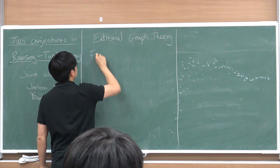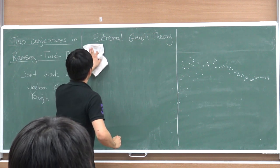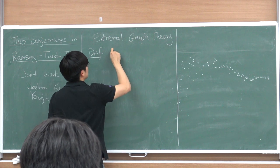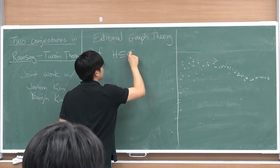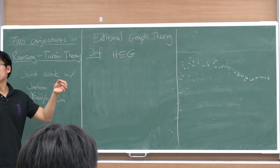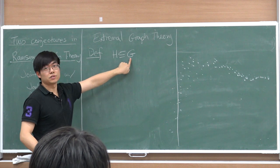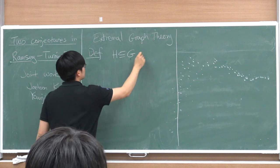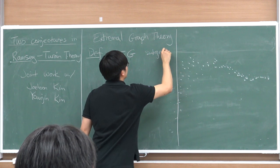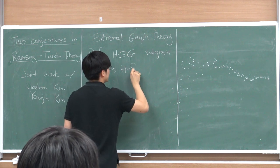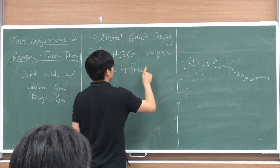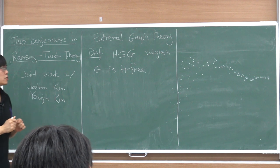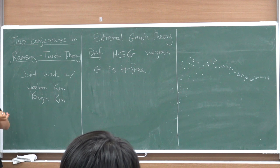We say a graph H is a subgraph of another graph G if you can embed the vertices of H into G that preserve the edge adjacency of the pairs. We say G is H-free if G does not contain H as a subgraph - not necessarily induced. So in this talk, I'm not talking about induced subgraphs, just containing H as a subgraph.